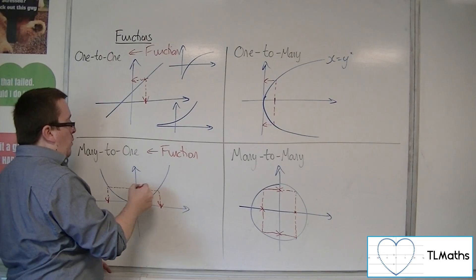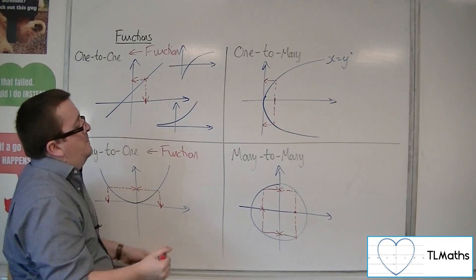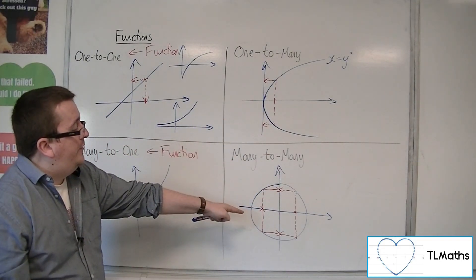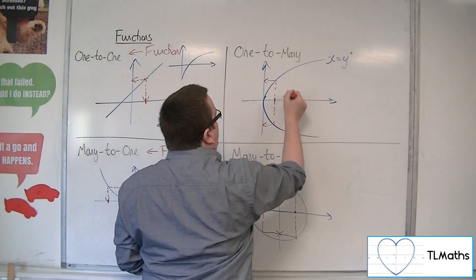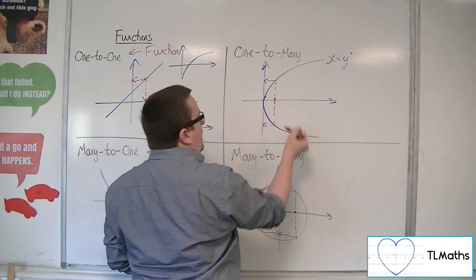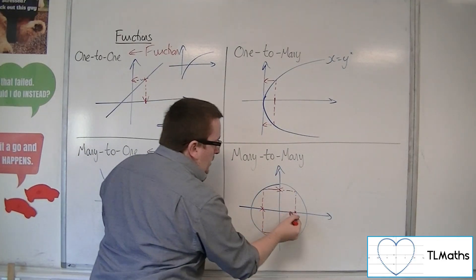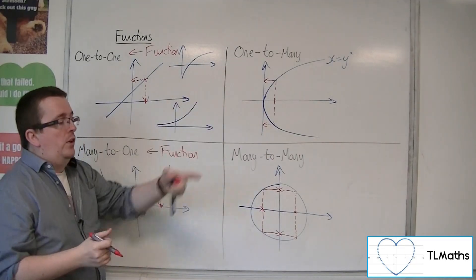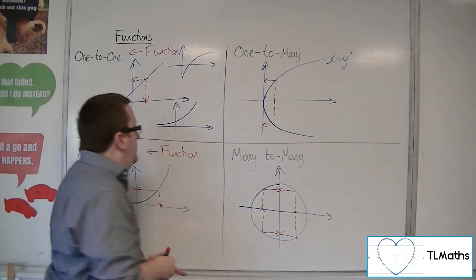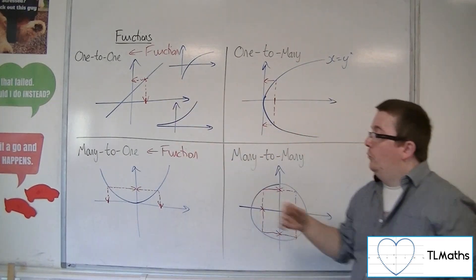A function can be many-to-one, and a function can be one-to-one, because I can put a value of x in and get out one value of y. But in both of these two cases, I put in one value of x and can get out two values of y. So neither of these would be examples of functions, but these would.